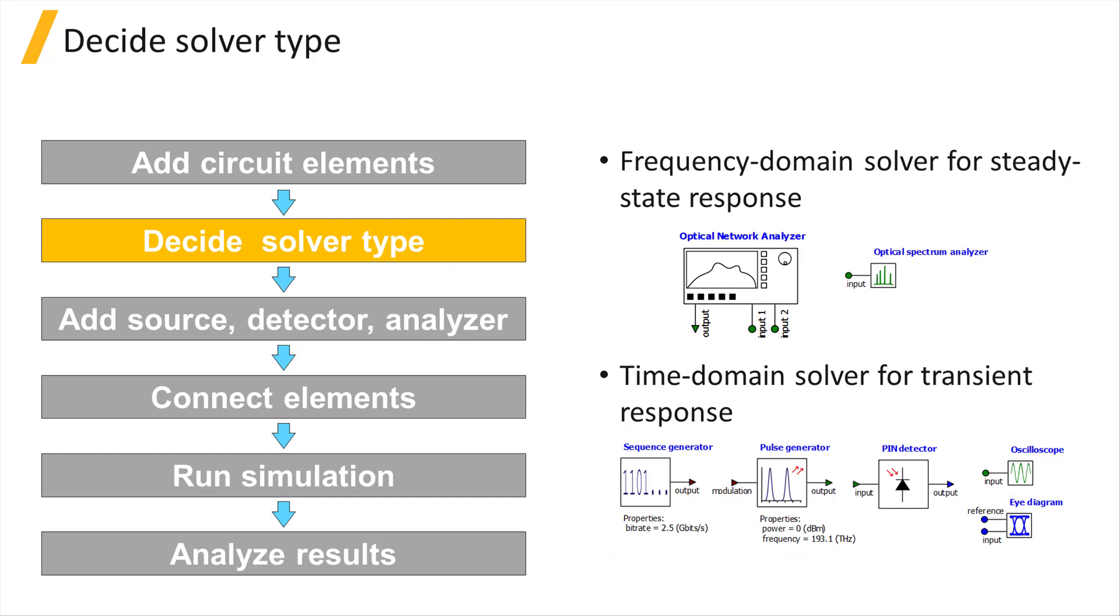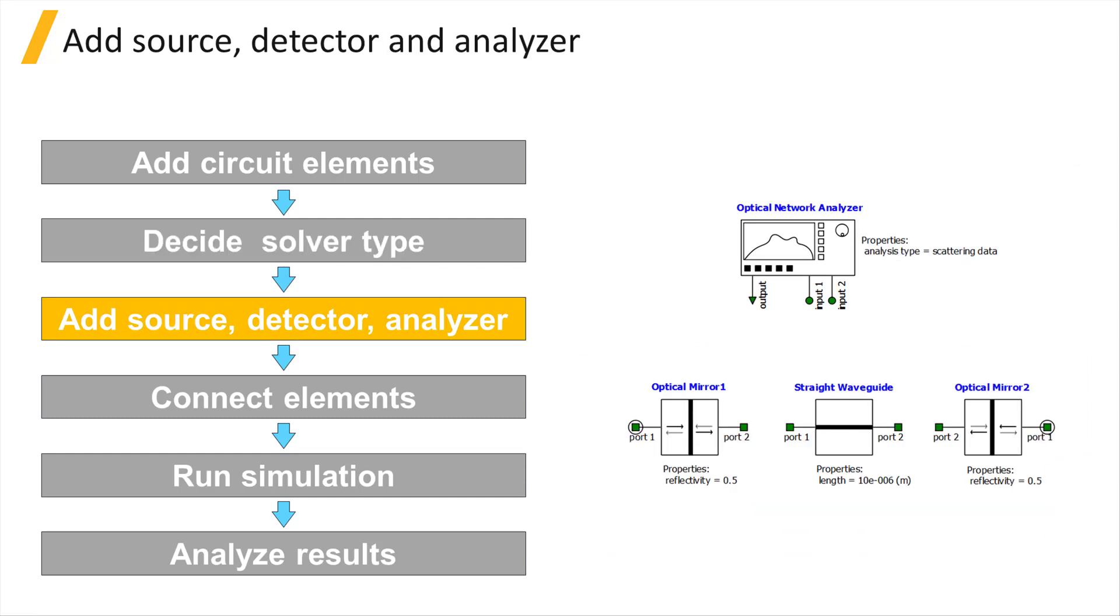Based on the type of solver, you can add the corresponding sources, detectors, and analyzers for that type of simulation. For example, for a frequency domain simulation, you can use an optical network analyzer, also called an ONA, to get the transmission spectrum from a circuit.